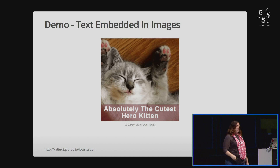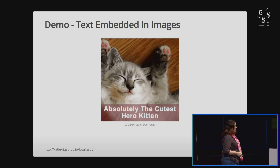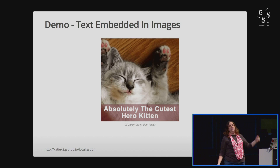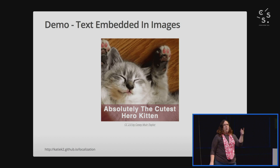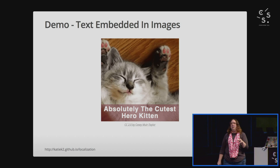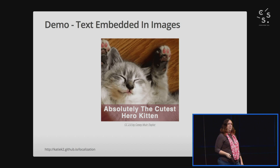Let's first talk about images and text embedded in images. This is not going to be the last kitten I'm going to show you today. What we want is for the image to be the exact same on every version of our site, but we want the text to change. I don't really want to host 20 different images with 20 different languages embedded in the text, and whenever the text changes, I don't want to make 20 new images in Photoshop. So instead, we're going to use our modern CSS skills to let the text be text and the image be an image.